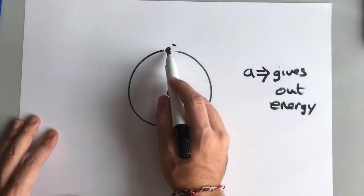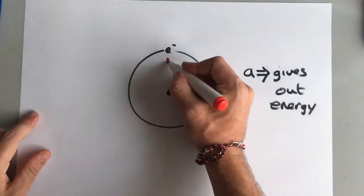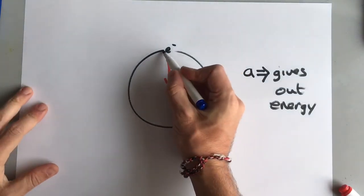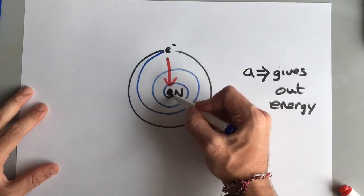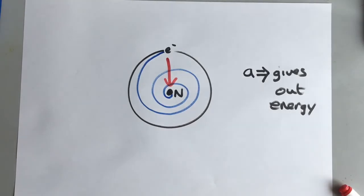Now if this electron is accelerating, which we know it is because circular motion says that there's a constant acceleration towards the centre of a circle, then this electron must constantly be giving out energy. If the electron is constantly giving out energy, then it should slowly spiral into the nucleus as it loses energy, and when it reaches the nucleus, it should annihilate.